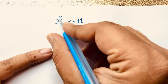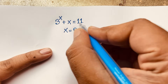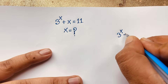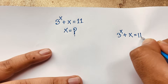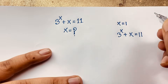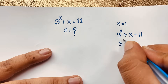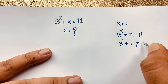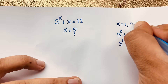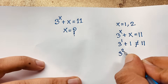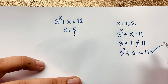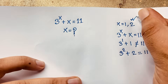Our question here: 3 to the power x plus x is equal to 11. Now if you think x is equal to 1, you can see 3 to the power 1 plus 1 is not equal to 11. Now if you think x is equal to 2, you can see 3 to the power 2 plus 2, this is 11. So this is right — x is equal to 2. This is our right answer.